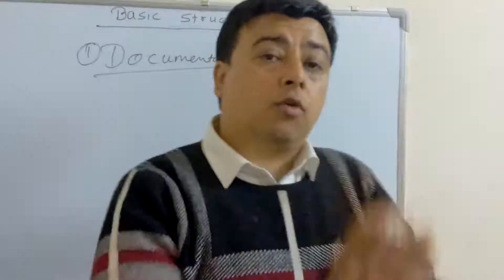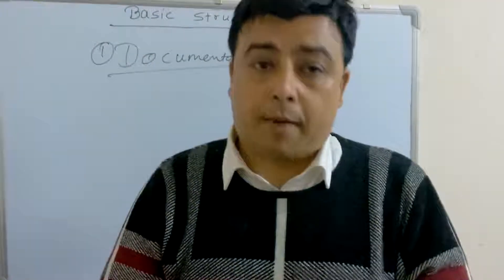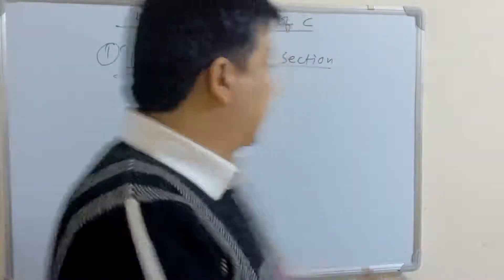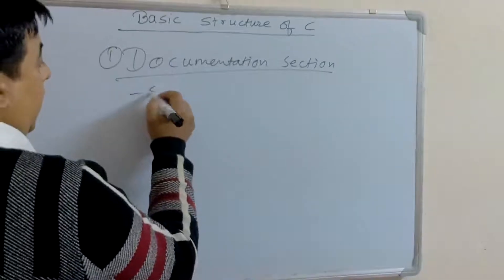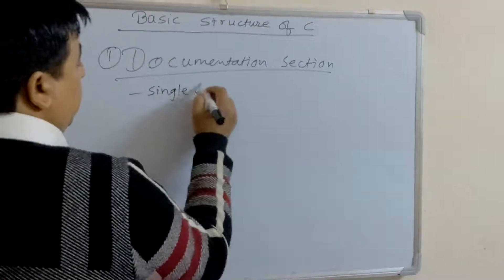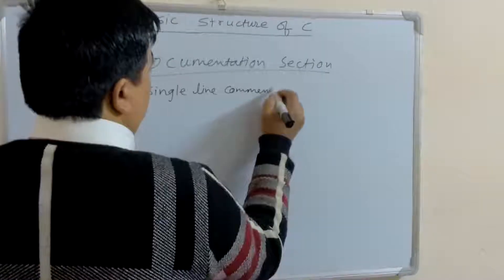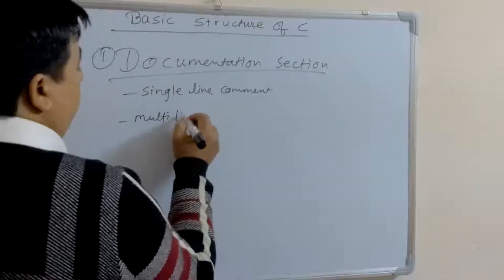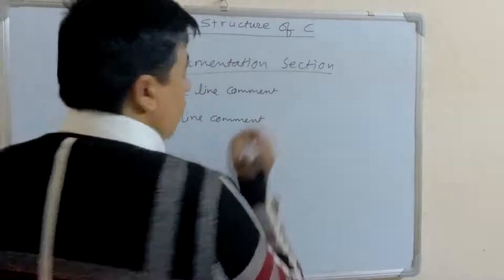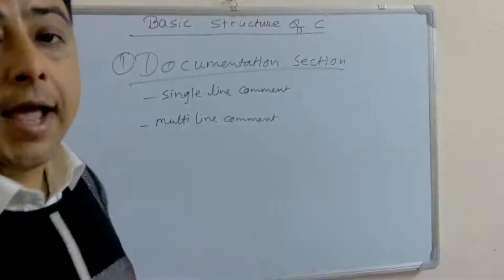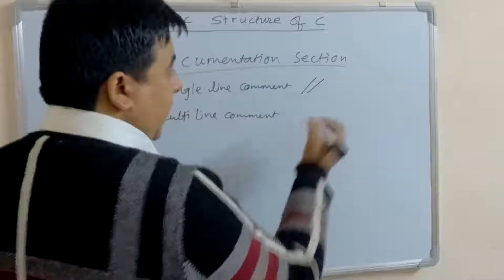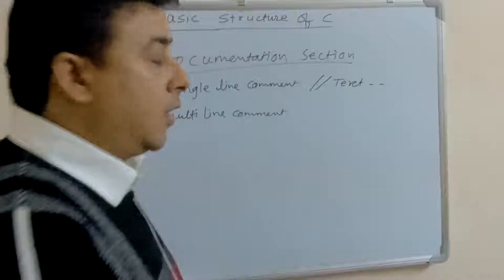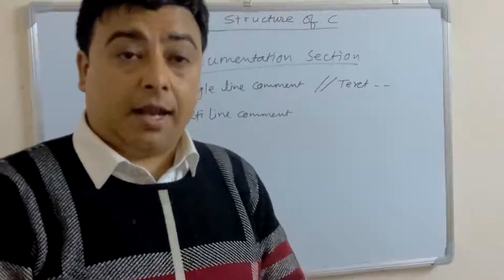When we start to write the program, we use comment part. It is categorized in two parts. One is single line comment. To comment a single line, we use double forward slash and write the text. It is only used for single line comment.